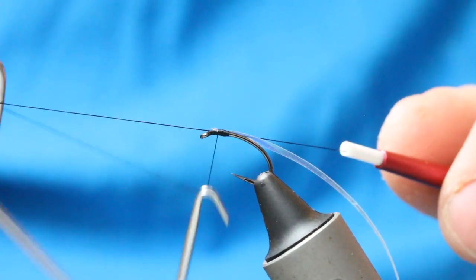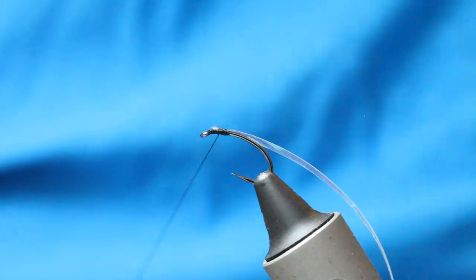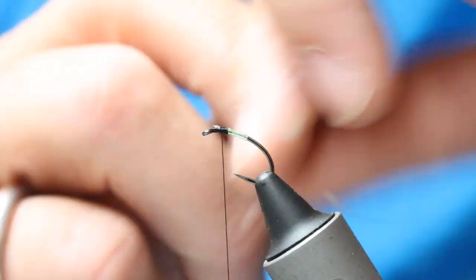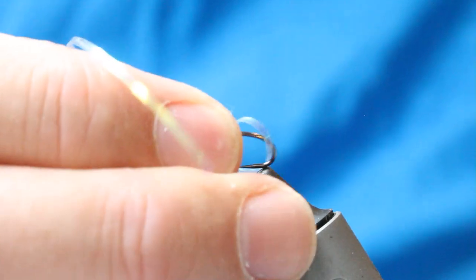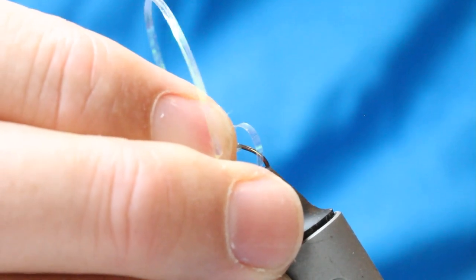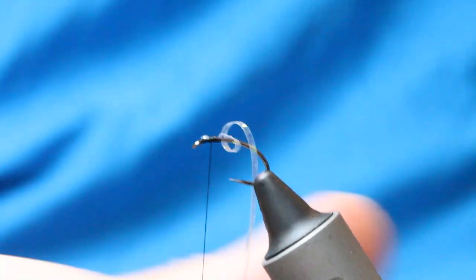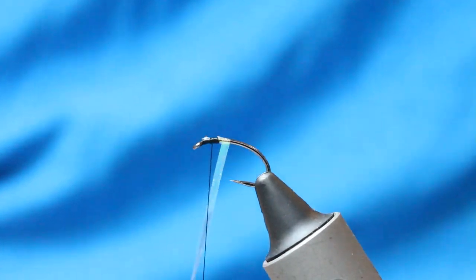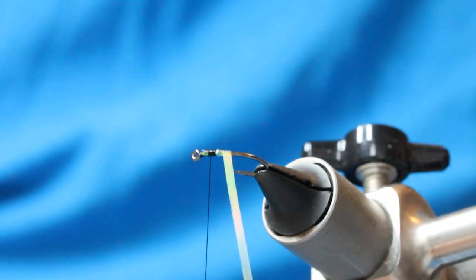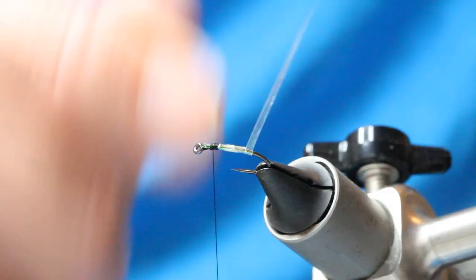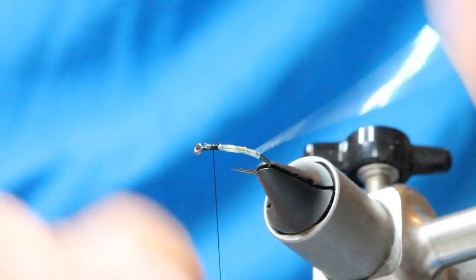So coming down the hook shank, touching turns. I might turn it just a little bit so I can see what I'm doing a little bit better. Just lock that there, just overlapping turns. Keep it tight.